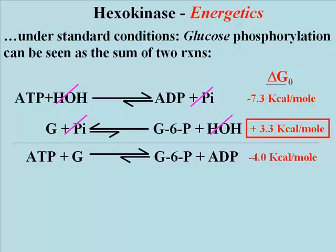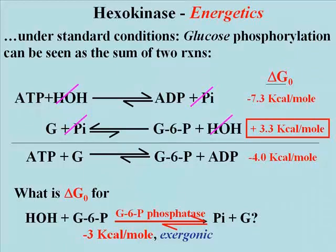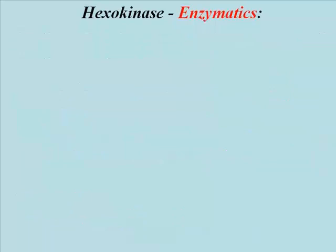This is an example in which an exergonic reaction is coupled to an endergonic one. Let's take a look at another reaction: what's the standard free energy change for the hydrolysis of glucose 6-phosphate? This is an exergonic reaction, and the standard free energy change is minus 3.3 kcal per mole. This is an important chemical reaction, especially in liver cells. Let's look at the enzymatics — that is, some of the catalytic properties — of hexokinase.